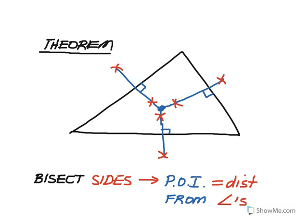If I was to take a segment from that point of intersection out to each of the three angles, those would be equidistant. We could use that center point of intersection as the center of a circle with a radius equal to the length from that point out to the vertex of an angle, and it would circumscribe a circle around the triangle.